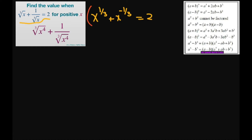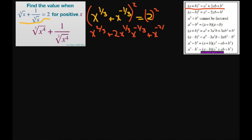Then I'm going to square both sides to get a perfect square trinomial. That gives x to the power of 2/3 plus 2 times x to the power of 1/3 times x to the power of negative 1/3 plus x to the power of negative 2/3 equals 4. The middle term equals 1, because x to the power of 1/3 minus 1/3 equals x to the power of 0, which equals 1.